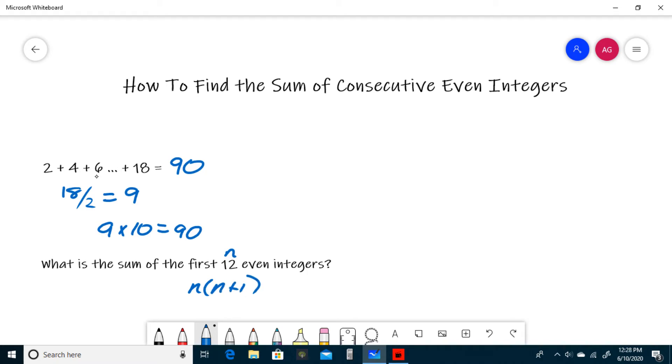This is basically what we did before, except just don't divide by 2 at the beginning. So n plus 1 is 13, so 12 times 13 is 156. So the sum of the first 12 even integers is 156.